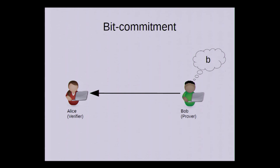We have Alice, the verifier, and Bob, the prover. Bob has selected the value of some bit B, but he does not yet want Alice to know that value. On the other hand, he wants to convince Alice that he can't change his mind about that later on.